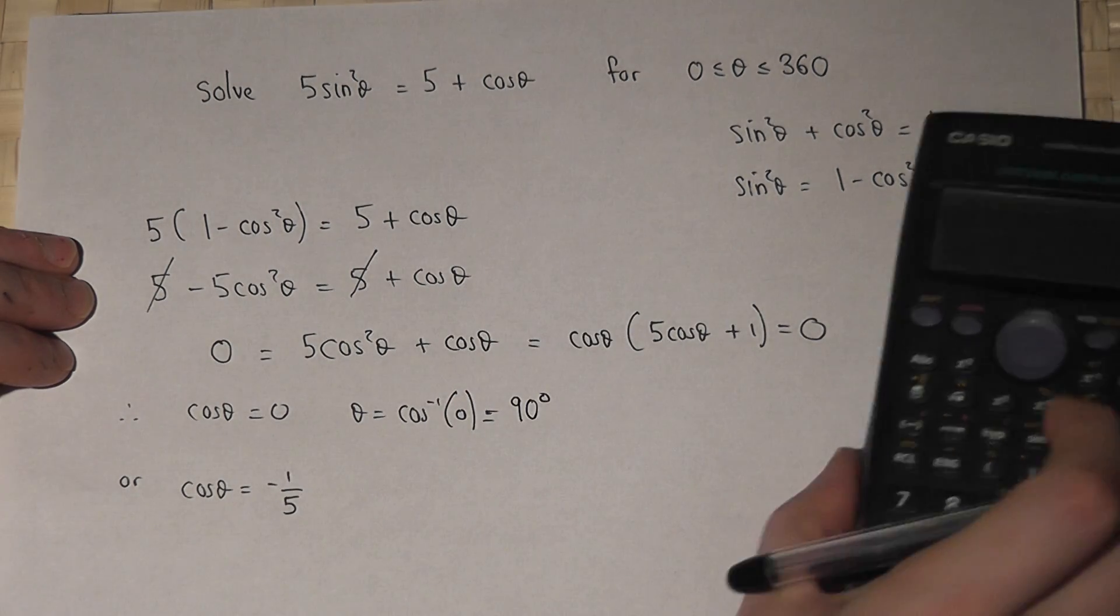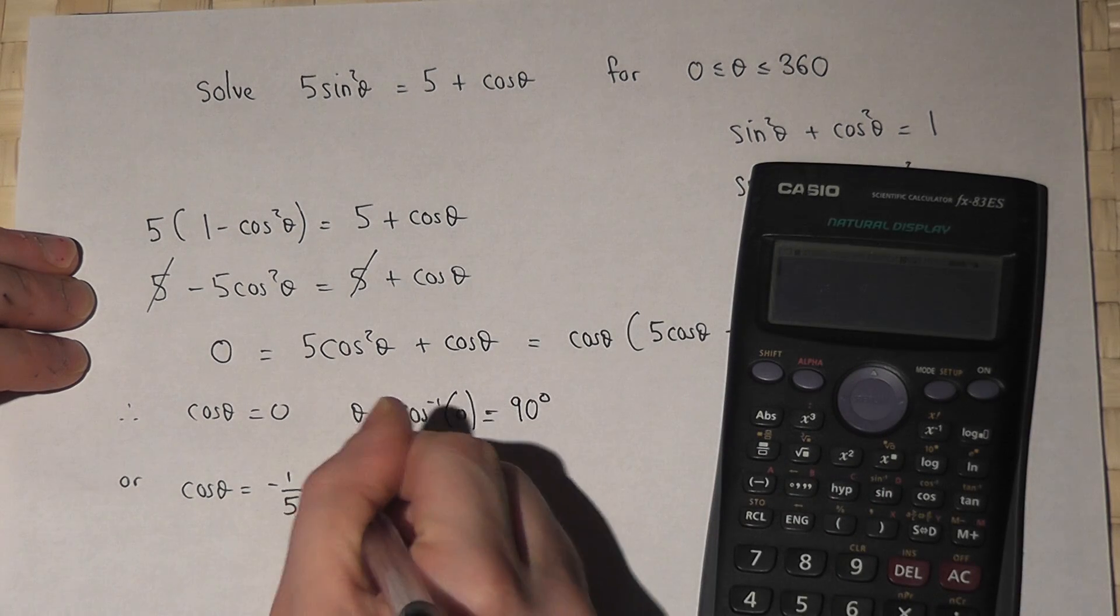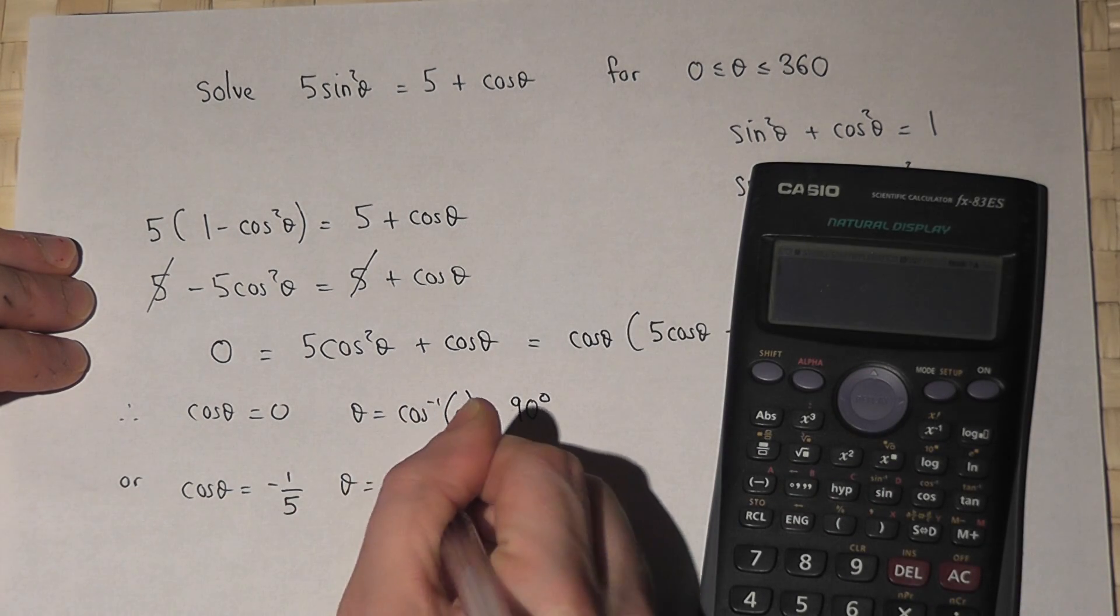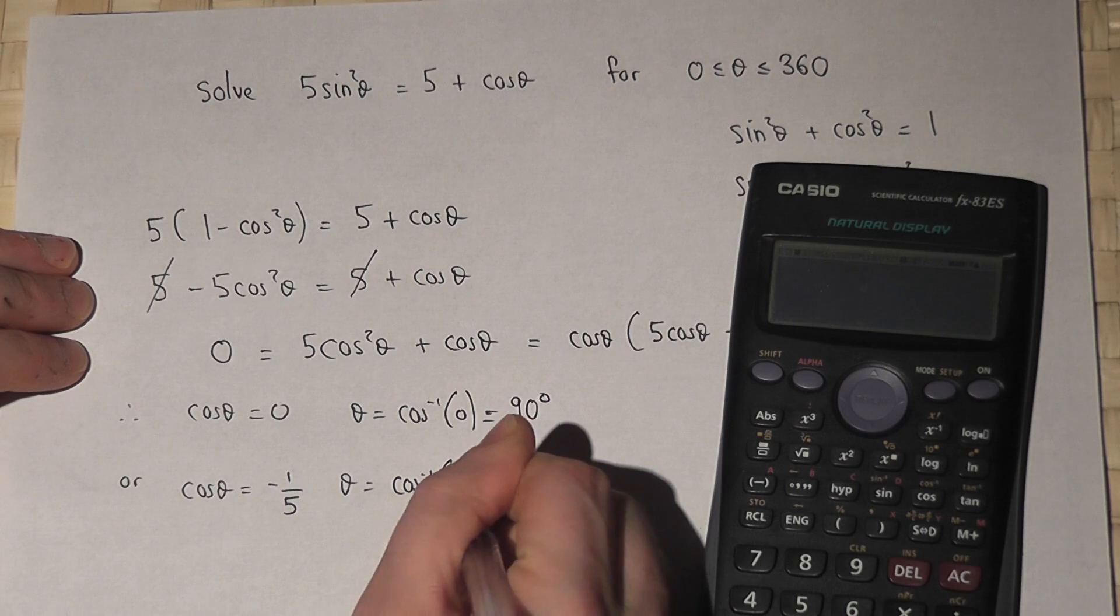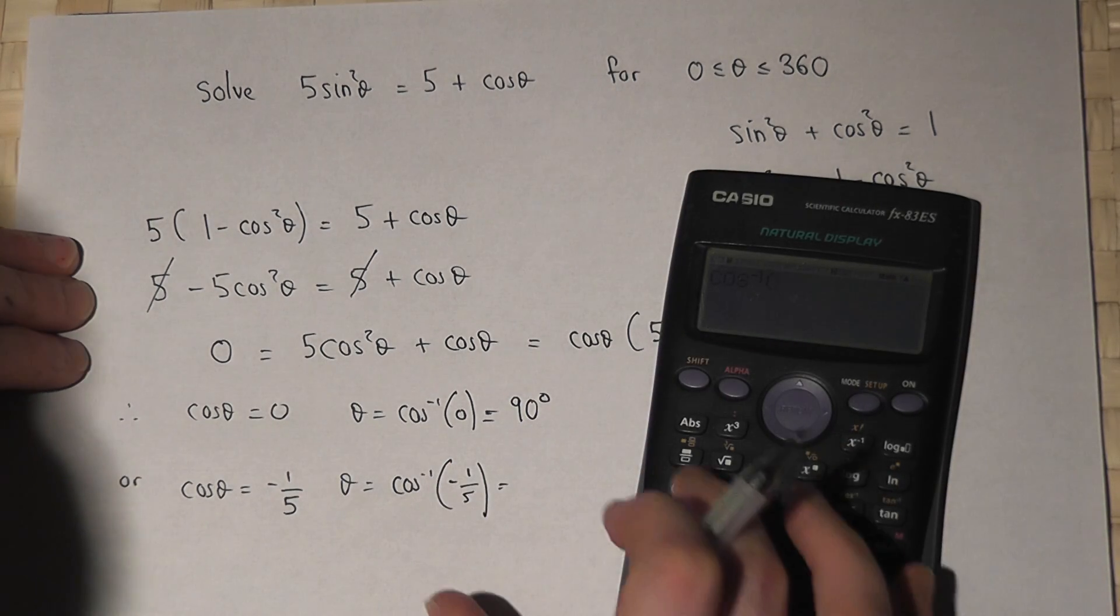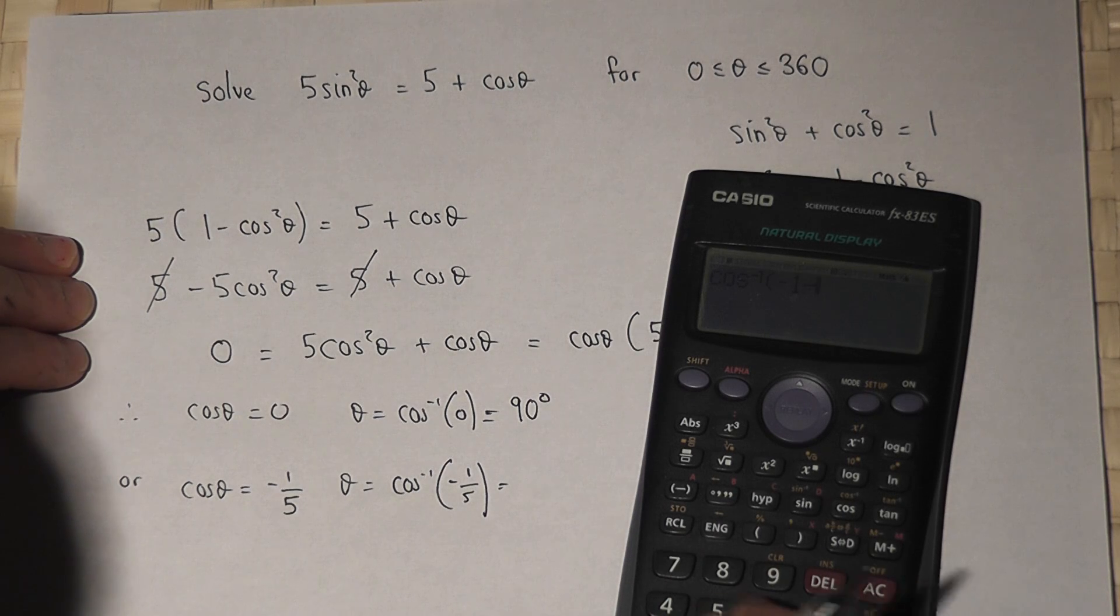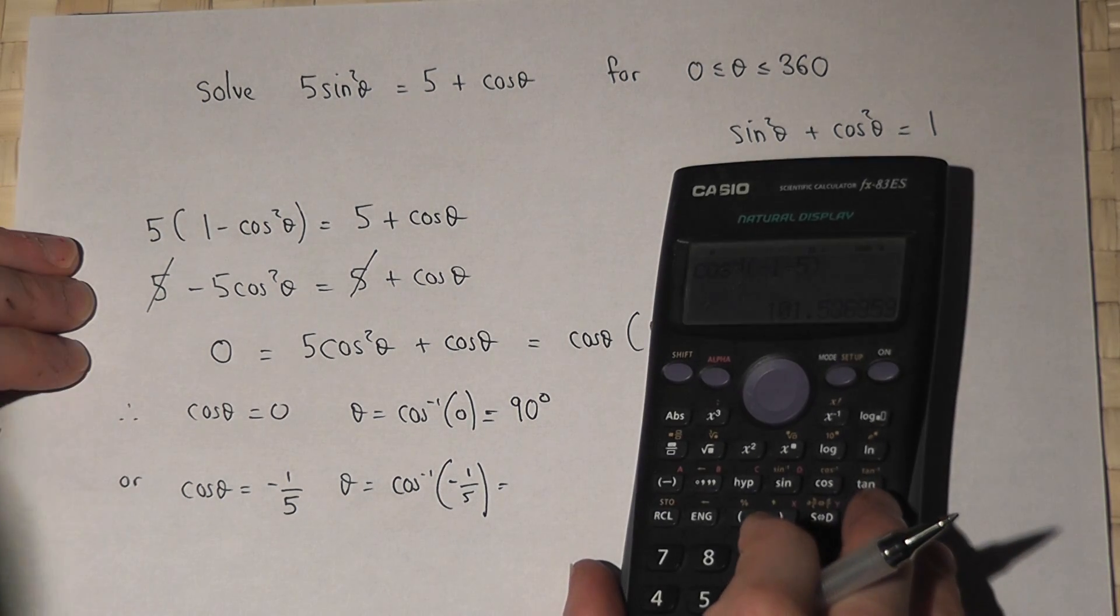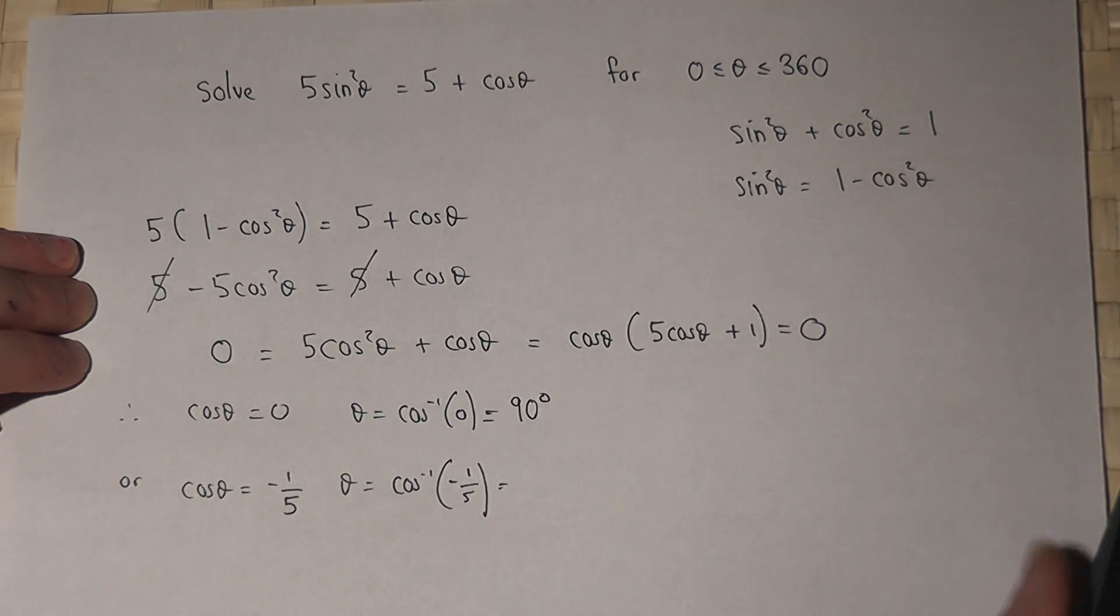There's one more solution to start off with, which is theta equals inverse cosine of minus 1 over 5, and that gives us 101.5 degrees.